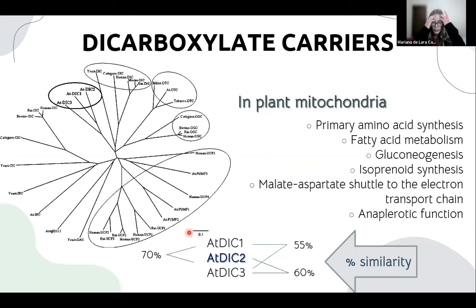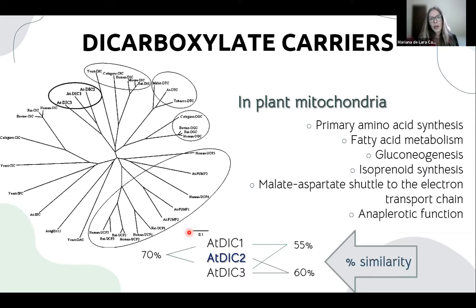Initially, the DICs were associated with another MCF — the uncoupling proteins — but in 2008, Palmieri and co-workers proposed a recategorization of these genes as DICs after performing extensive phylogenetic and biochemical analysis. The dicarboxylates are essential substrates and intermediates during cellular respiration, and especially in the tricarboxylic acid cycle. The DICs may also be associated with other metabolic pathways, being able to transport reduced molecules derived from glycolysis through the malate-aspartate shuttle.